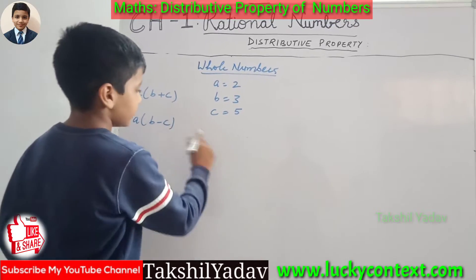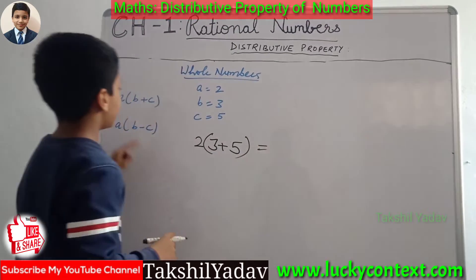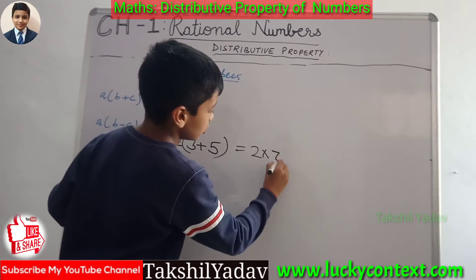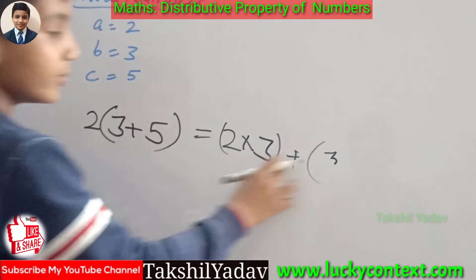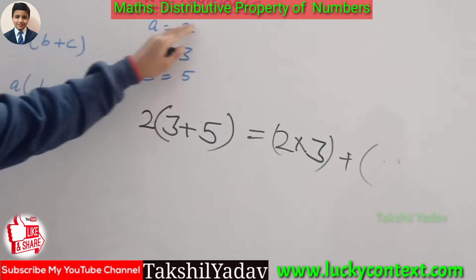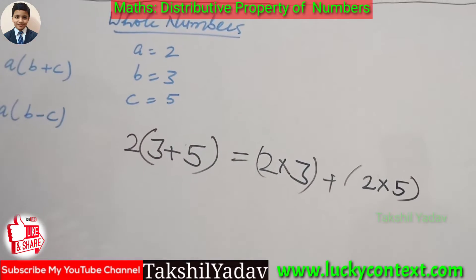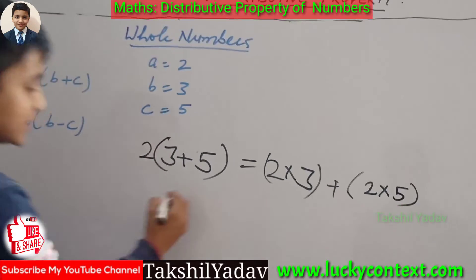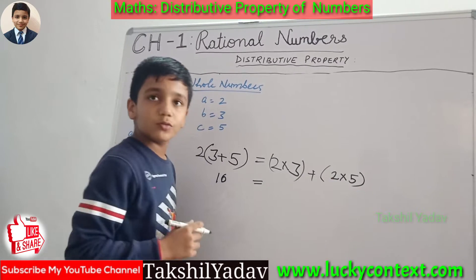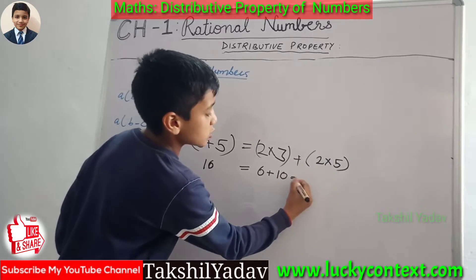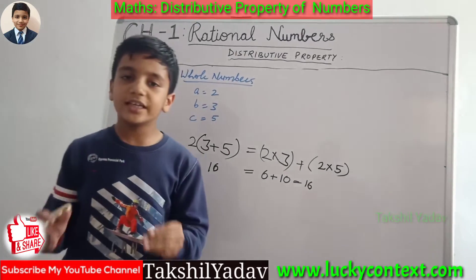We put the values in the formula and get 2 into 3 plus 5 on the LHS, and on the RHS we have AB plus AC: 2 into 3 plus 2 into 5. On solving, on the LHS we get 2 into 8, which is equal to 16. On the RHS, we get 2 into 3, that is 6, and 6 plus 2 into 5, that is 10. 6 plus 10 is also equal to 16. LHS and RHS both have the same solution. Thus we verify that whole numbers are distributive in the case of multiplication over addition.